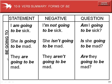To form the future using be going to. For statements: I am going to be sick. She is going to be mad. They are going to be mad. To form the negative: I'm not going to be sick. She isn't going to be mad. They aren't going to be mad.